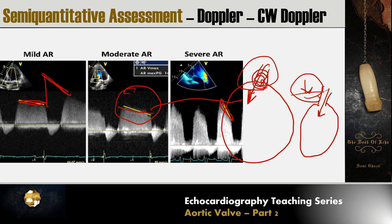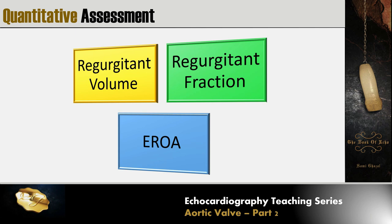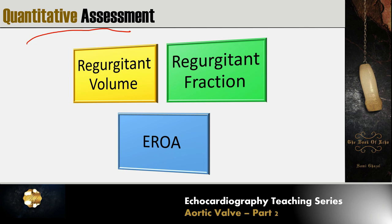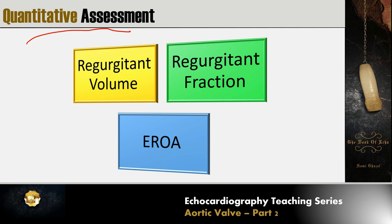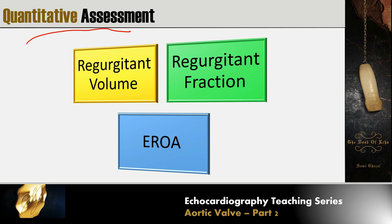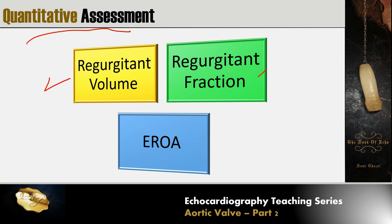We now proceed to quantitative assessment, which is the gold standard for grading valve pathology severity — whether regurgitation or stenosis. It is particularly important when valve pathology is at least moderate and when surgical or interventional decisions depend on the echocardiography report. For aortic regurgitation, we calculate the regurgitant volume, regurgitant fraction, and effective regurgitant orifice area.